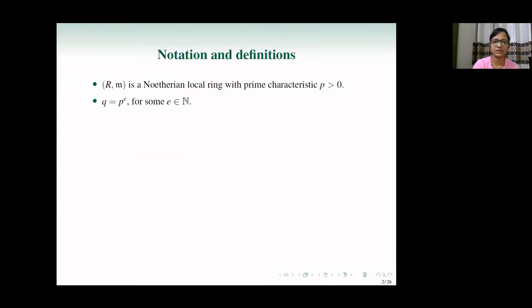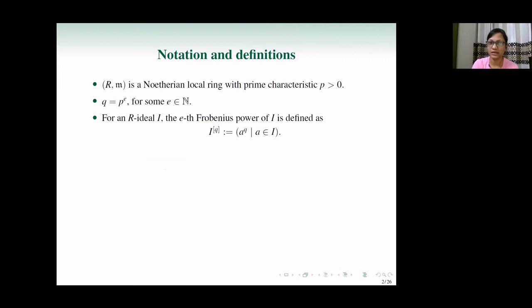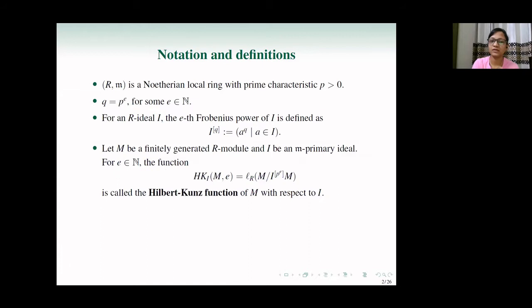We'll fix a few notations and definitions. Throughout the talk, the ring R will be a Noetherian local ring with prime characteristic p. M will be its unique maximal ideal, and Q will always be a prime power. For an R-ideal I, the e-th Frobenius power of I, which we denote by I^[q] where q = p^e, is the ideal generated by the q-th powers of elements of I. The length function — length of M over I^[q] times M — is called the Hilbert-Kunz function of module M with respect to ideal I.